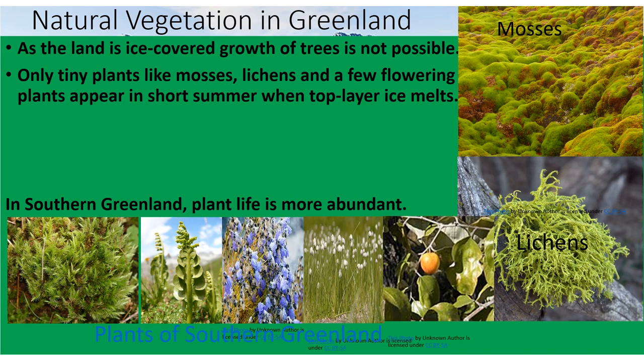Natural vegetation in Greenland: as the land is ice-covered, growth of trees is not possible. Only tiny plants like moss, lichens, and a few flowering plants appear in the short summer when the ice melts in the coastal areas. In southern Greenland, plant life is more abundant in the coastal area.